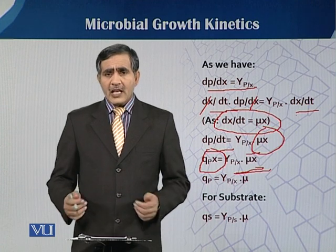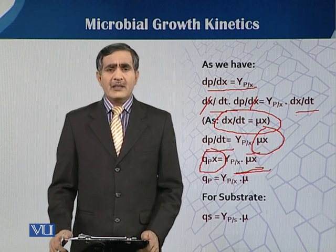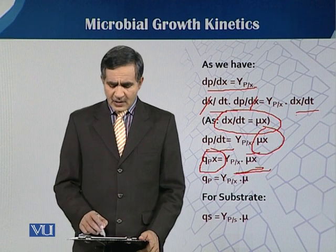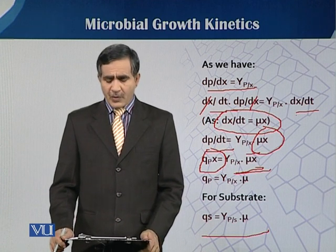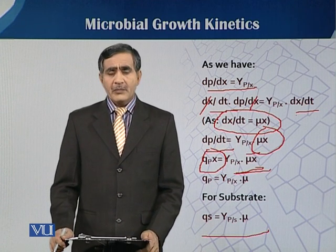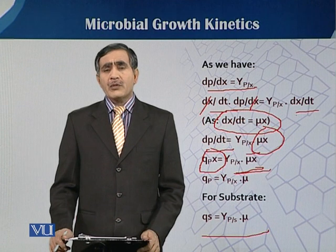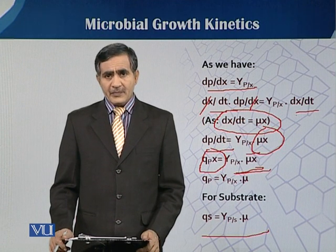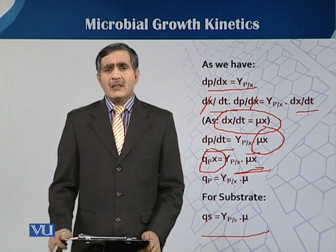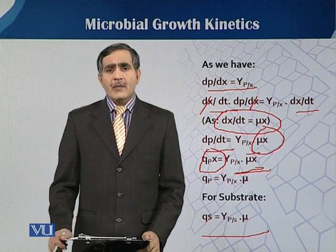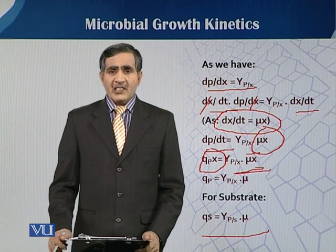If we transform this equation to account for the effect of substrate on product concentration, then Y is the yield concentration and the final equation is Y times mu. This can be considered the final equation with respect to process kinetics during batch fermentation. These process kinetics are discussed in detail by Pirt in his book dealing with fermentation kinetics.